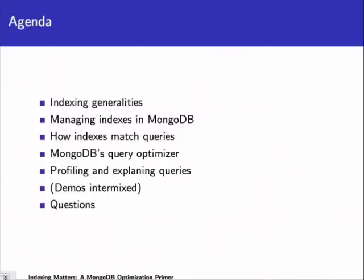Let's take a look at the agenda. I'm going to talk about indexing in general and some of the problems we see in the wild. I'll talk about managing indexes in Mongo — how to create them, delete them, look at their size. We'll look at example queries, how MongoDB's query optimizer works, and how to profile and explain queries. I also have a sample data set of tweets, and we'll build some indexes and look at how to explain our queries on those indexes.